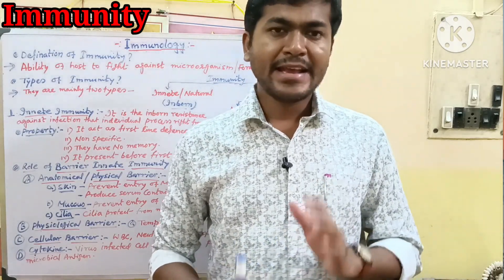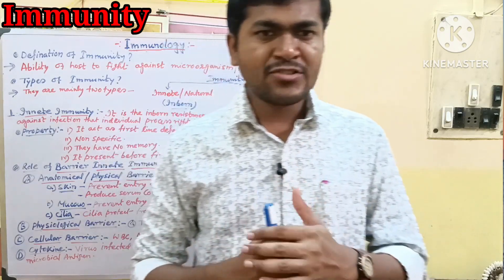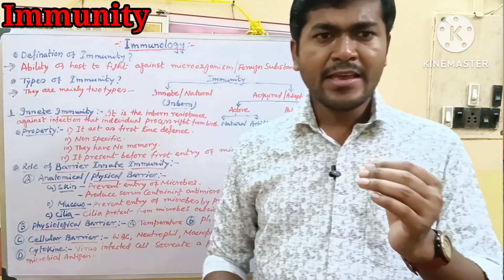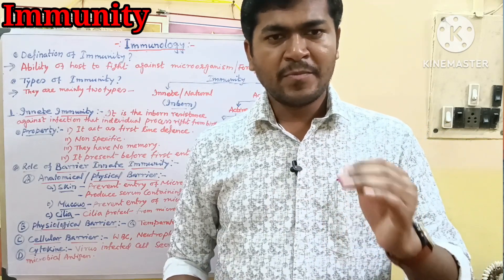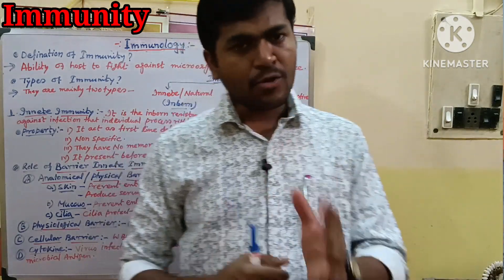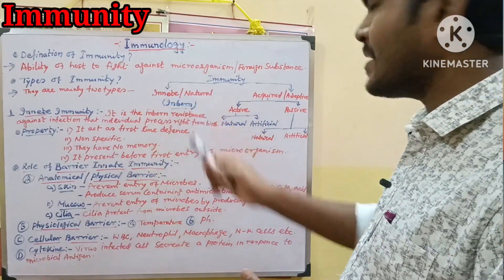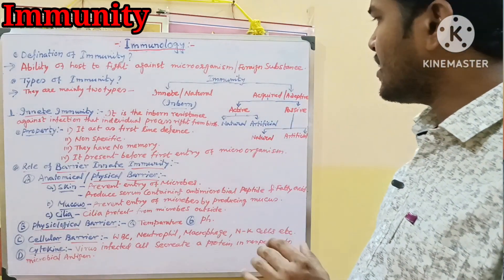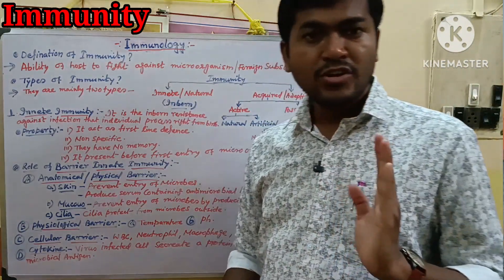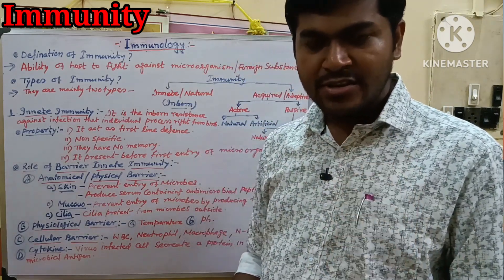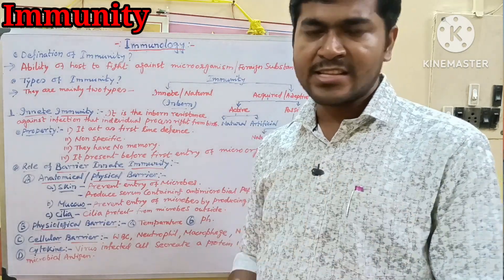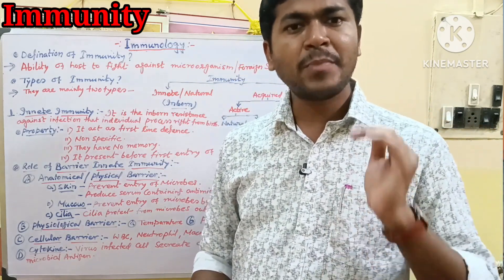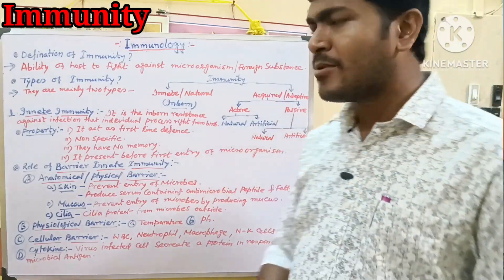Innate immunity is a true, inborn defense. Acquired immunity involves micro-organisms and is called natural immunity. Acquired immunity is also called adaptive immunity. Innate immunity involves transfer from parent to child.